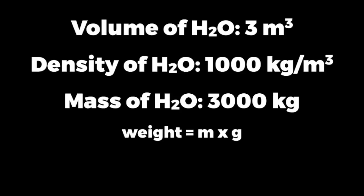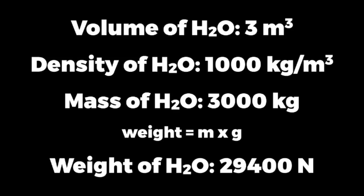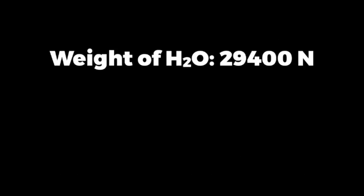And finally, knowing that the weight is equal to mass times the acceleration due to gravity, and we know that the acceleration due to gravity is equal to 9.8 meters per second squared, we can calculate that the weight is equal to 3000 times 9.8, which is equal to 29,400 newtons. So we've calculated the weight of H2O displaced, which is 29,400 newtons.